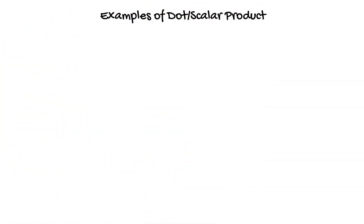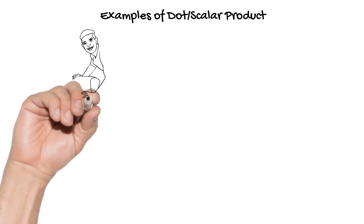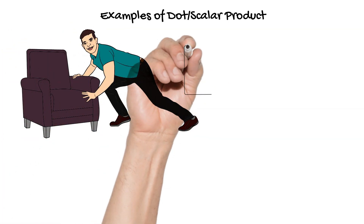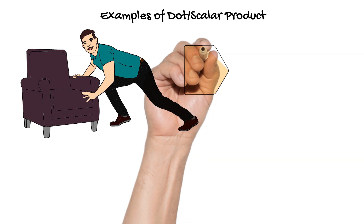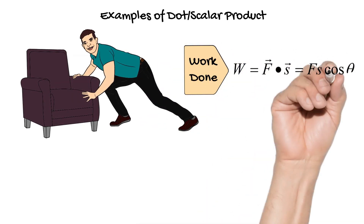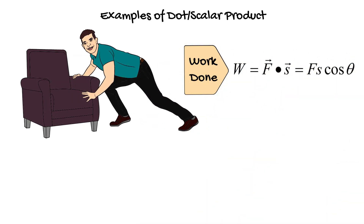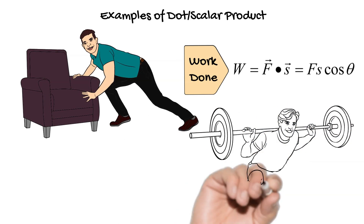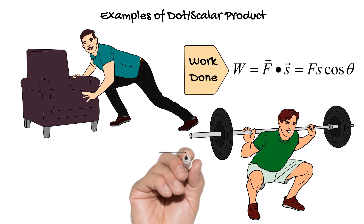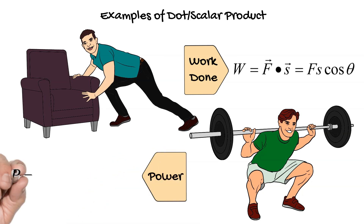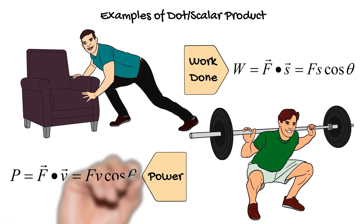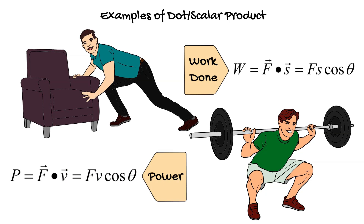Here are some examples of dot product. The first one is work done: work done equals f dot s equals fs cos theta. The second example is power: power equals f dot v equals fv cos theta. Both work done and power are scalar quantities, that's why dot product is also called scalar product.